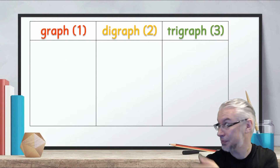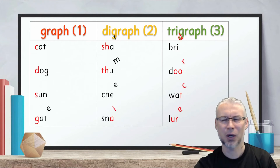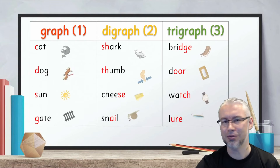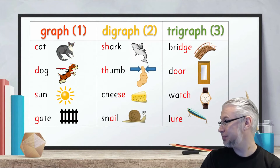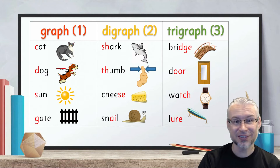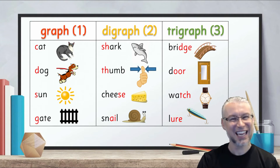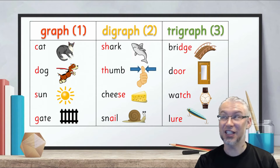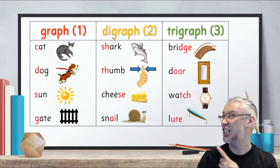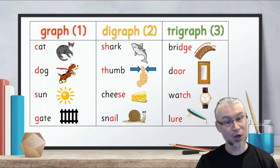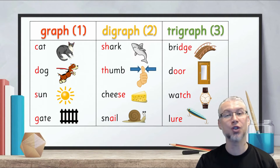Let's have a look at some examples. In the graph column we have cat, dog, sun, gate. In the digraph column we have shark, thumb, cheese, and snail. And in the trigraph column we have bridge, door, watch, and lure.